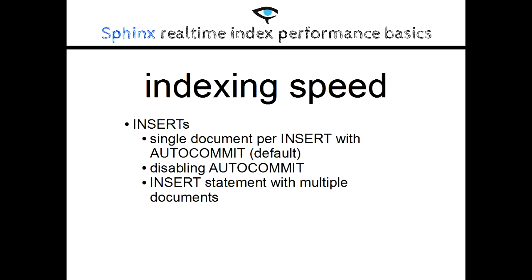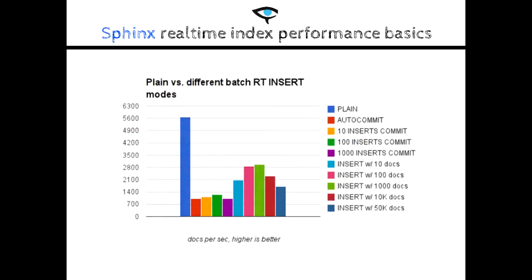Batch inserts in the real-time index can be made in three ways. You can do a normal insert with auto-commit, which is the default. You can disable auto-commit, run inserts with one document, and commit at 10, 100, 1,000 inserts, etc. Or, you can insert with multiple documents in one insert statement. The fastest method is the multiple-document insert. How many docs to put in a single insert? In our case, it was between 100 and 1,000. Going beyond this, we observed that the insert rate decreased.